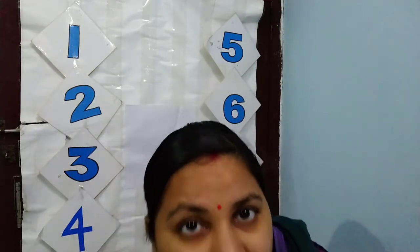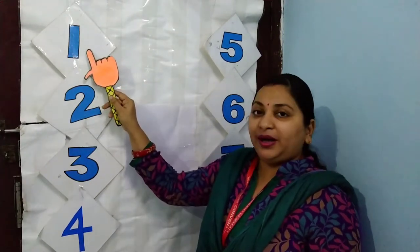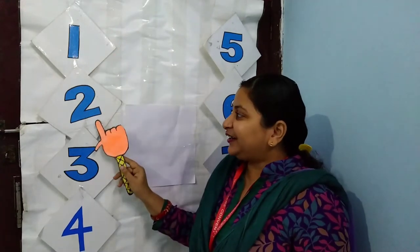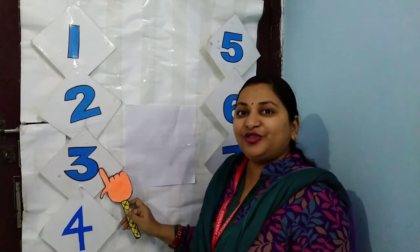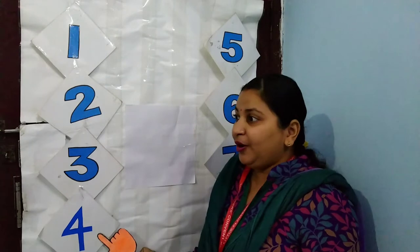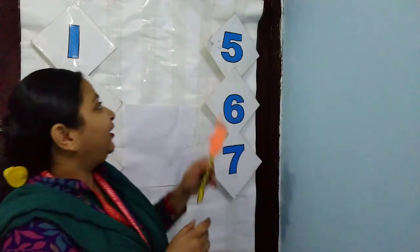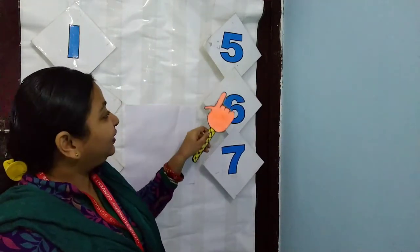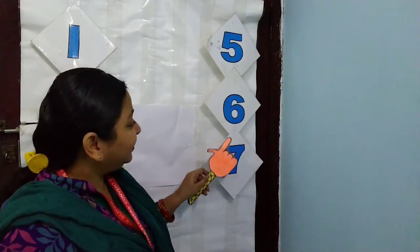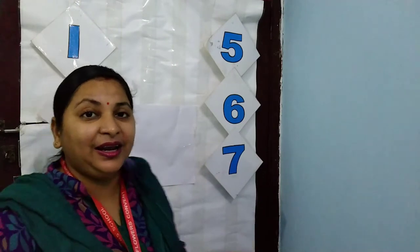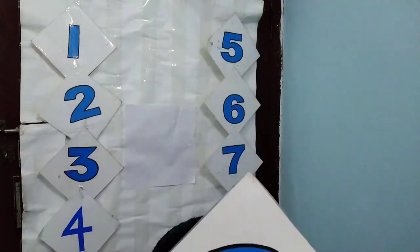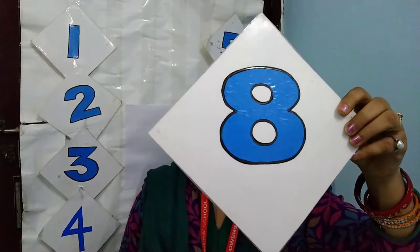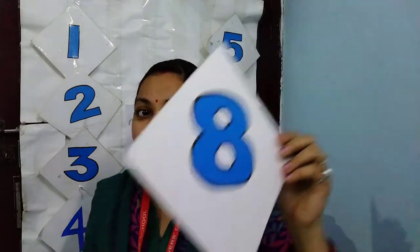All of you look here and count with me. Number 1, number 2, number 3, number 4, number 5, number 6, number 7. And what will come after number 7? This is number 8. Which number is this? This is number 8.